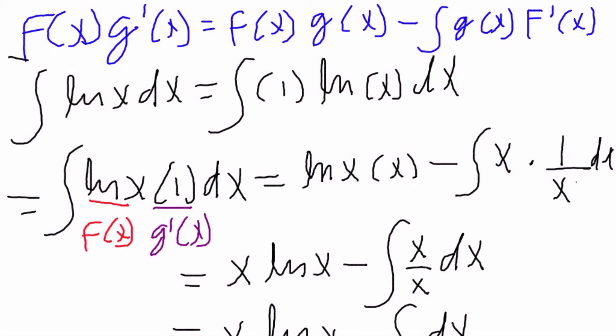You can use the u, du, v and dv method, but I find it easier that if you just take one function to be f of x and the other function to be g prime of x, and you simply follow this formula here, then you should be in good shape and you shouldn't have to do any substitution.